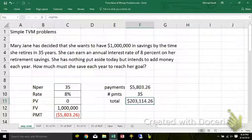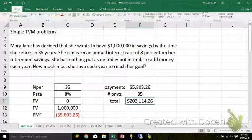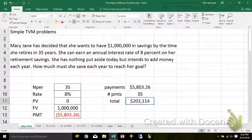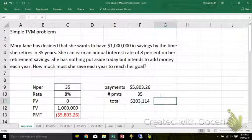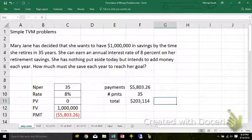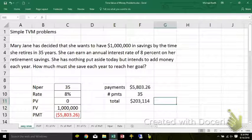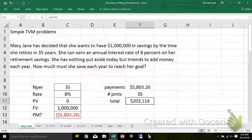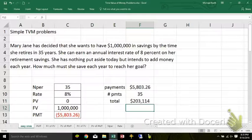So of that million dollars that she puts away, about a little over $200,000 of it is her money. The other $800,000 is interest. If you deposit $203,000 and you take out a million 35 years from now, everything over the amount of money you put in is the interest earned. Move to the next one.